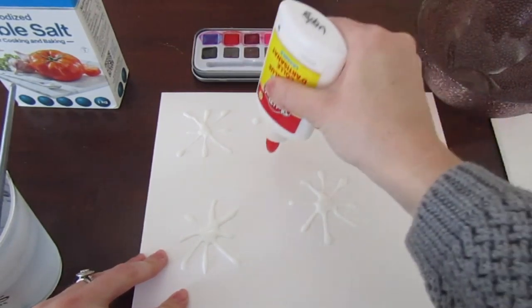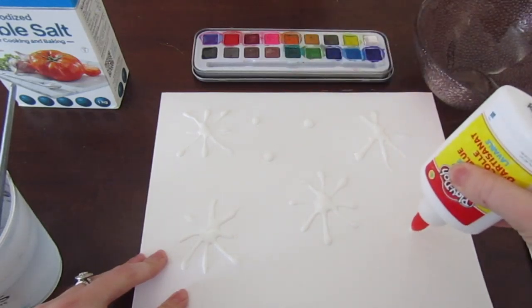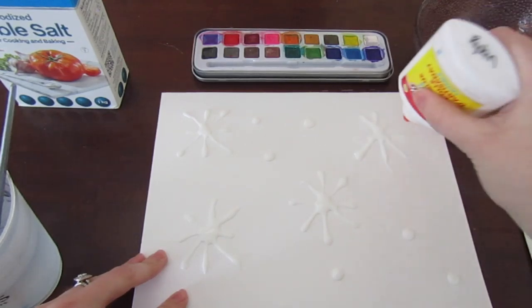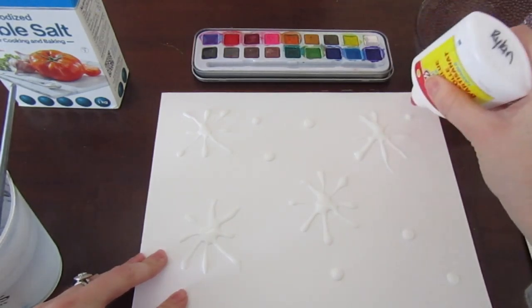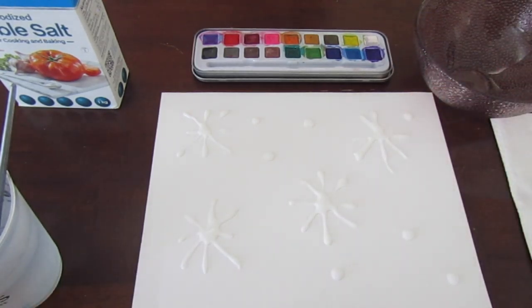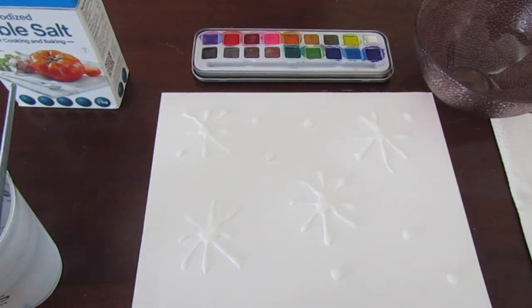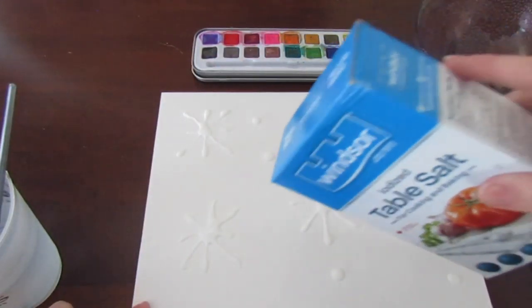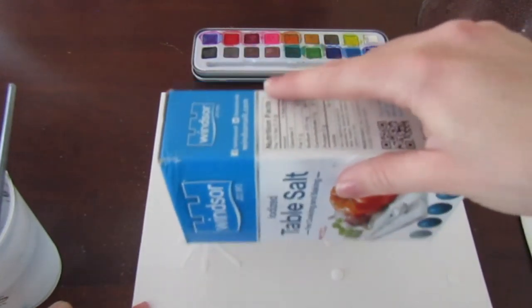Then I'm going to do one more down here and then I'm going to use my glue to just do dabs of little circles all over my page just to add to my picture.